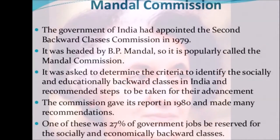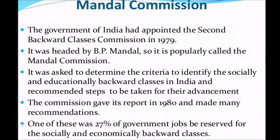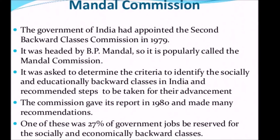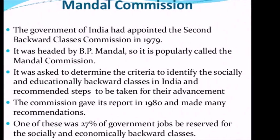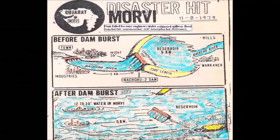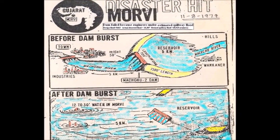1979: The Mandal Commission was set up and the Morvi Dam burst. 1980: Indira Gandhi returned to power. Sanjay Gandhi was killed in a plane crash, and Rajiv Gandhi began to work for Indian Airlines.